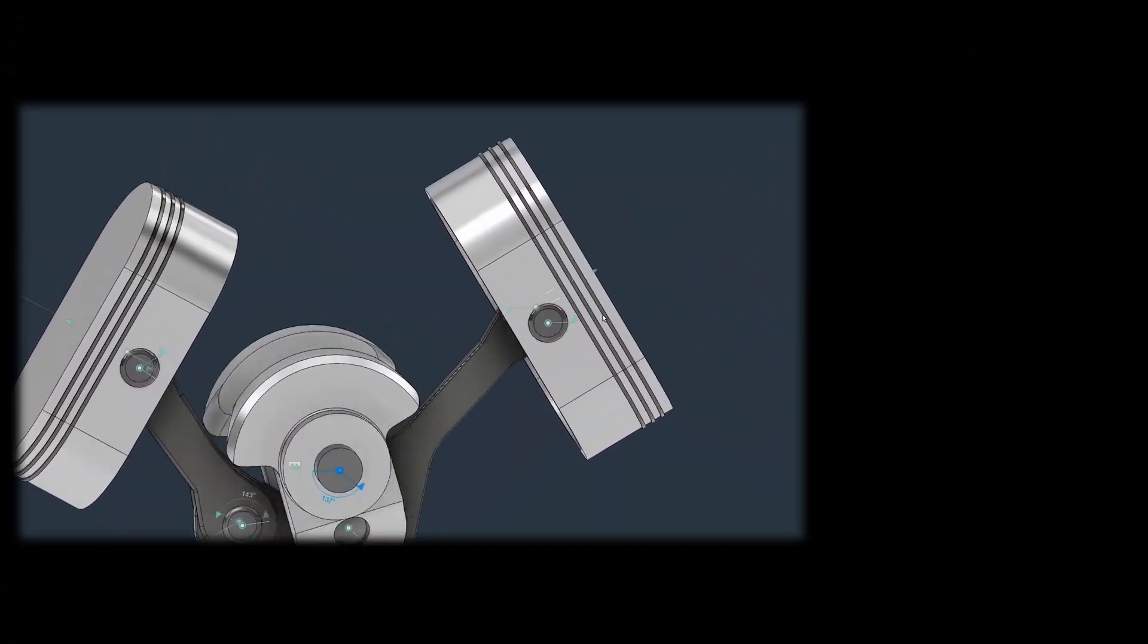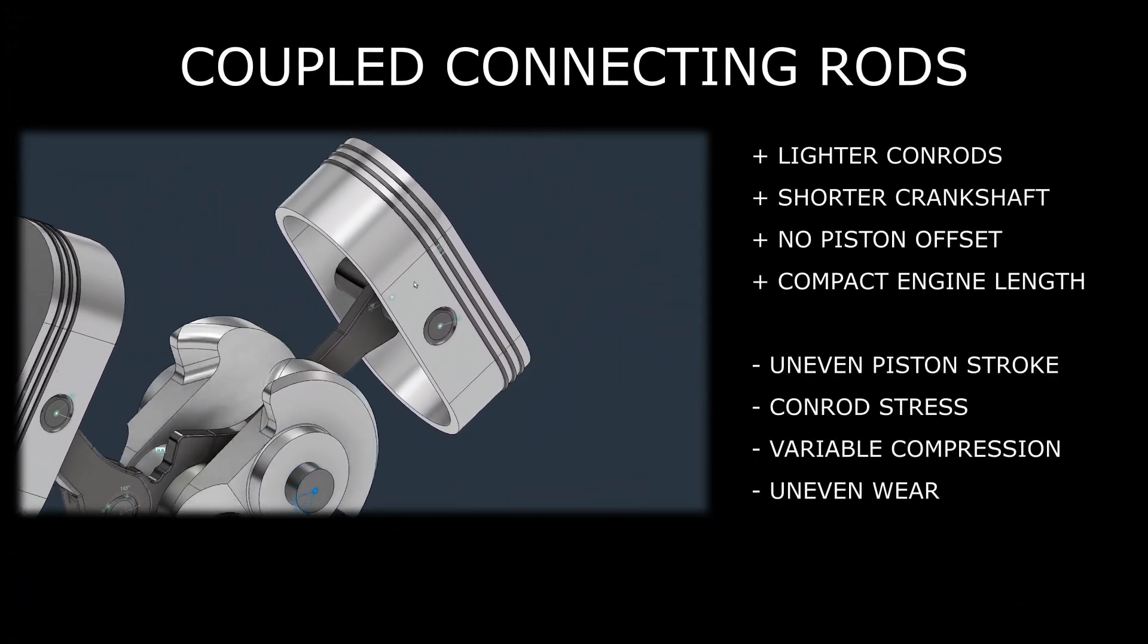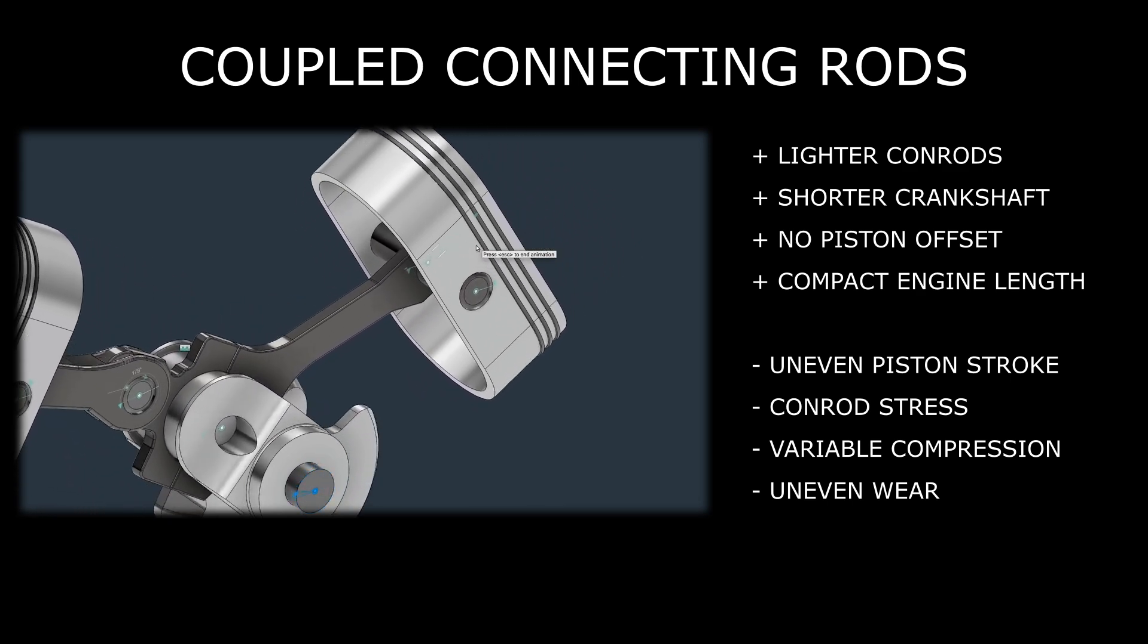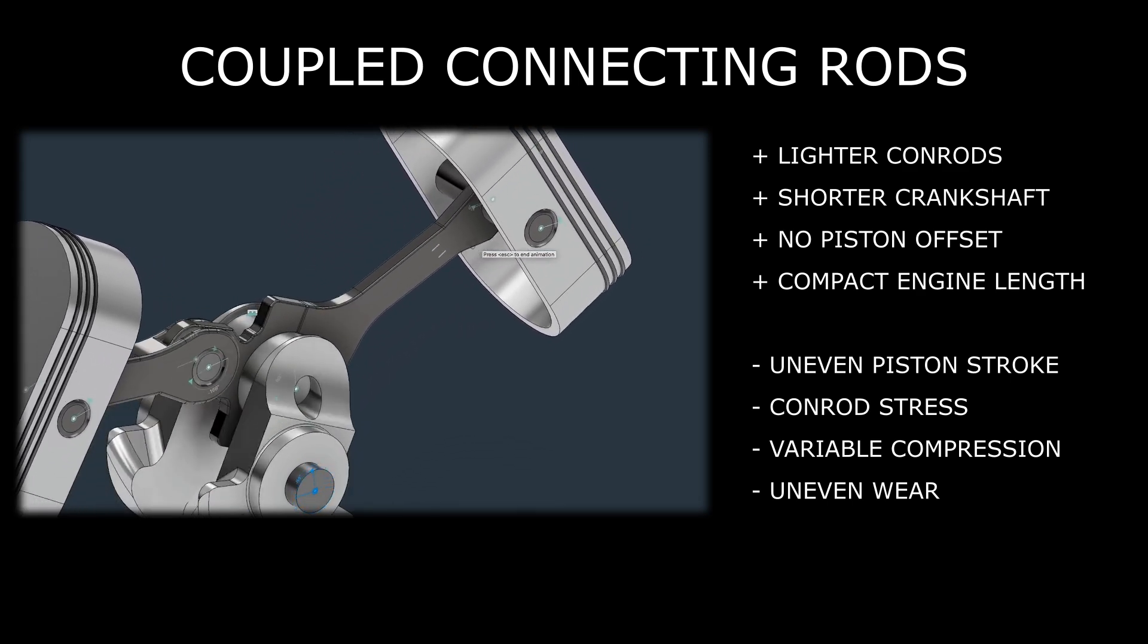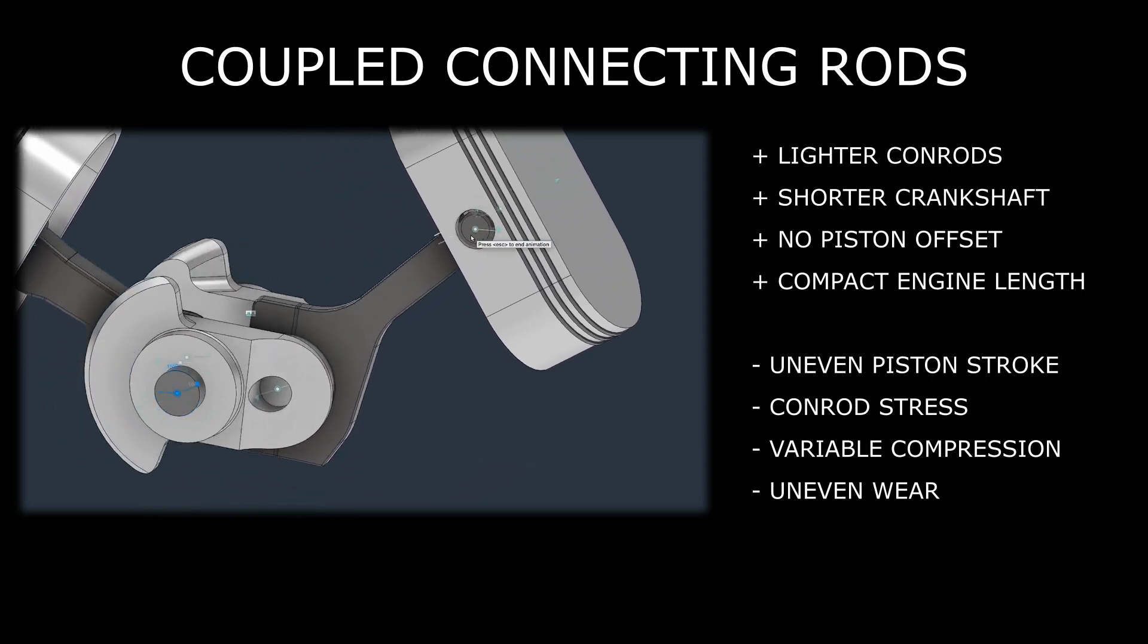This solution also has advantages. Less weight on the rods, a lighter crankshaft, less vibration due to no-offset cylinders, and of course, the engine length can be reduced.